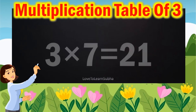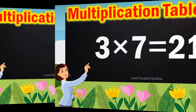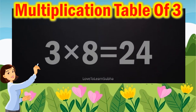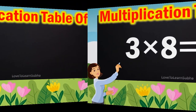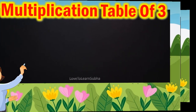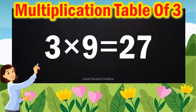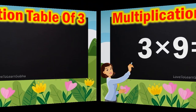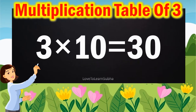3 7s are 21, 3 8s are 24, 3 9s are 27, 3 10s are 30.